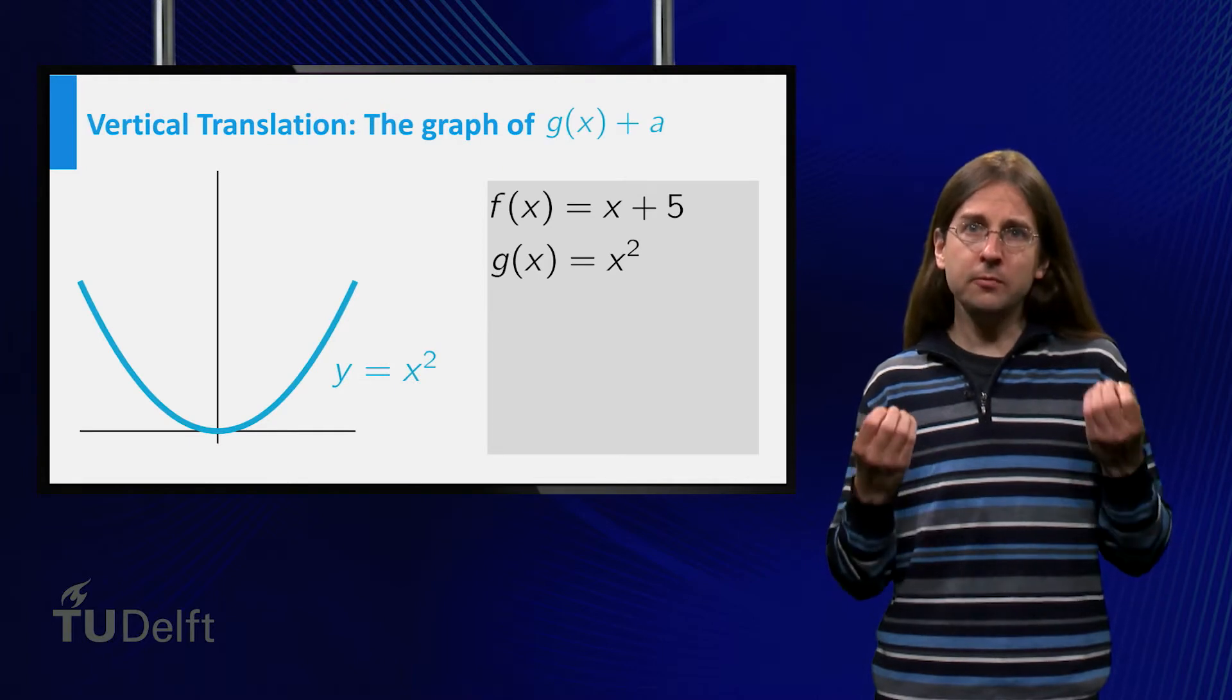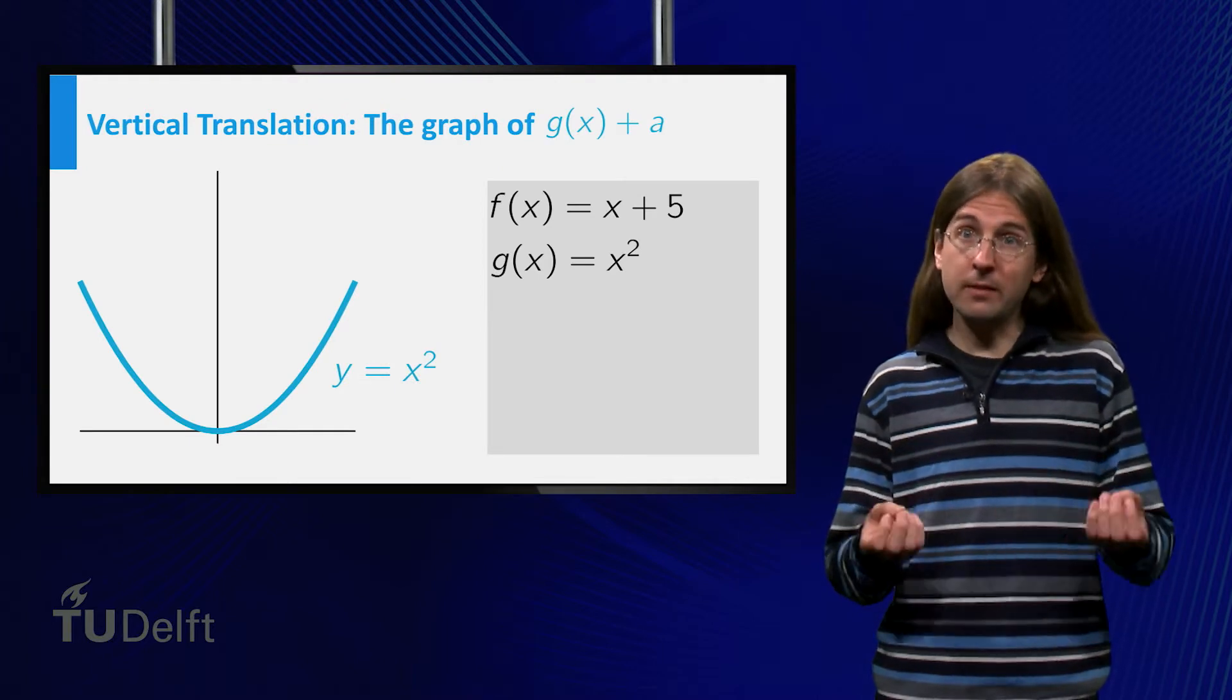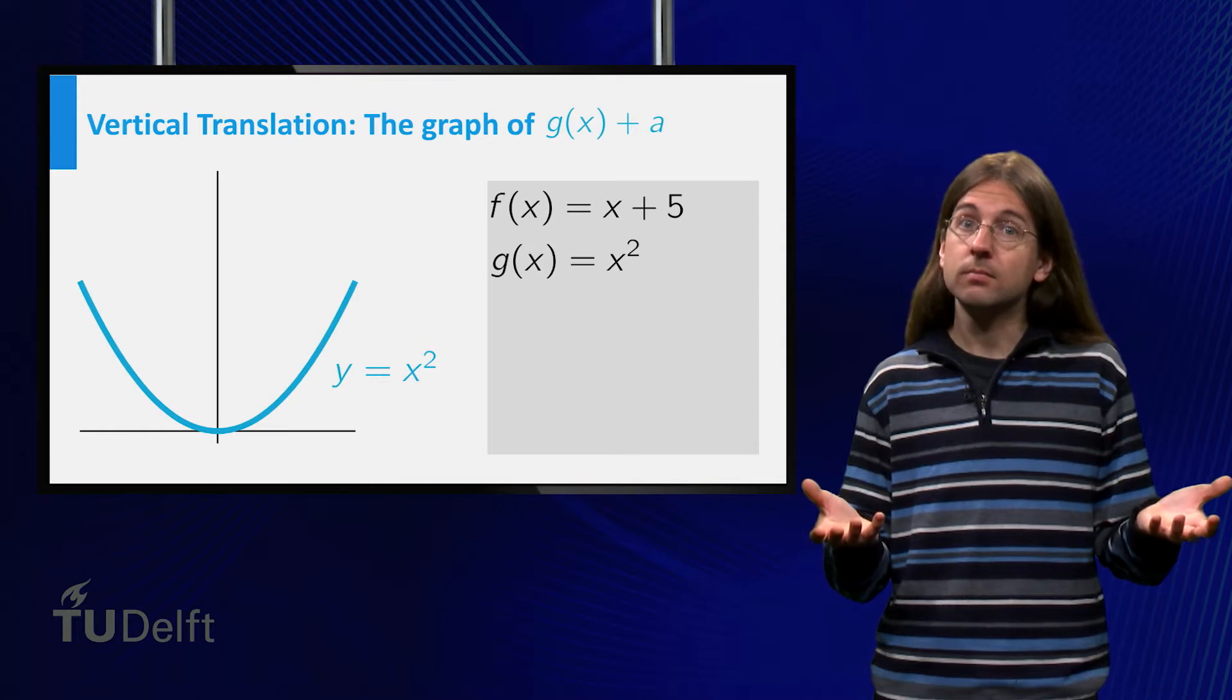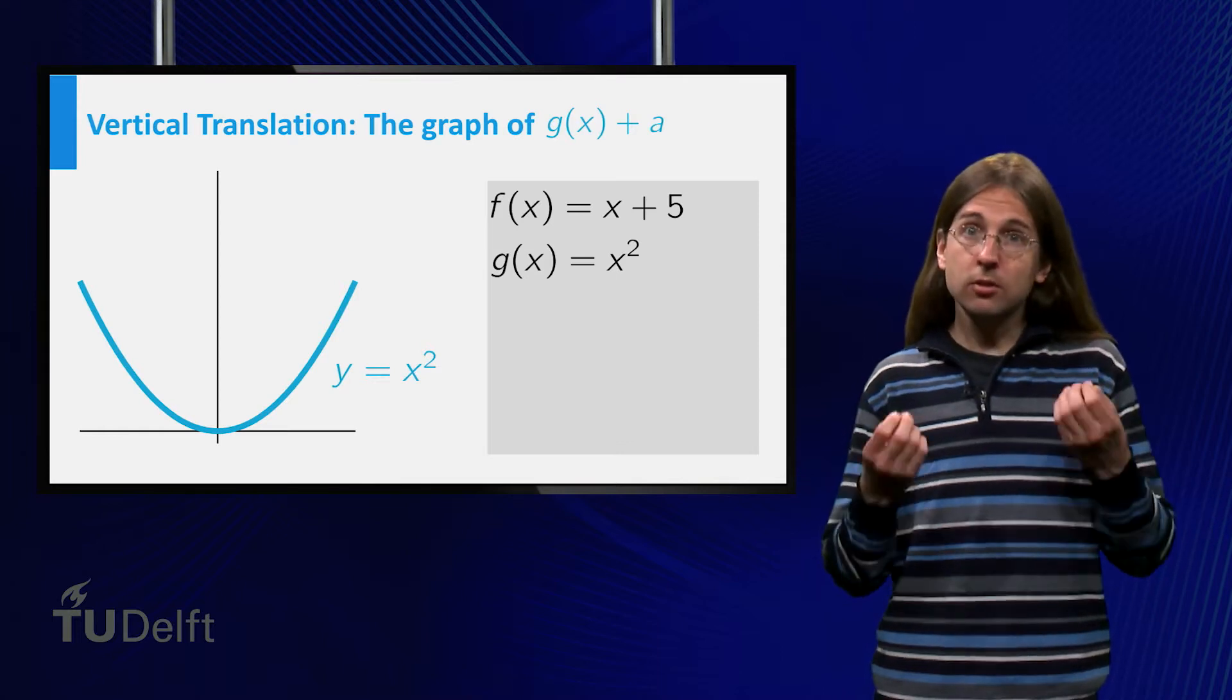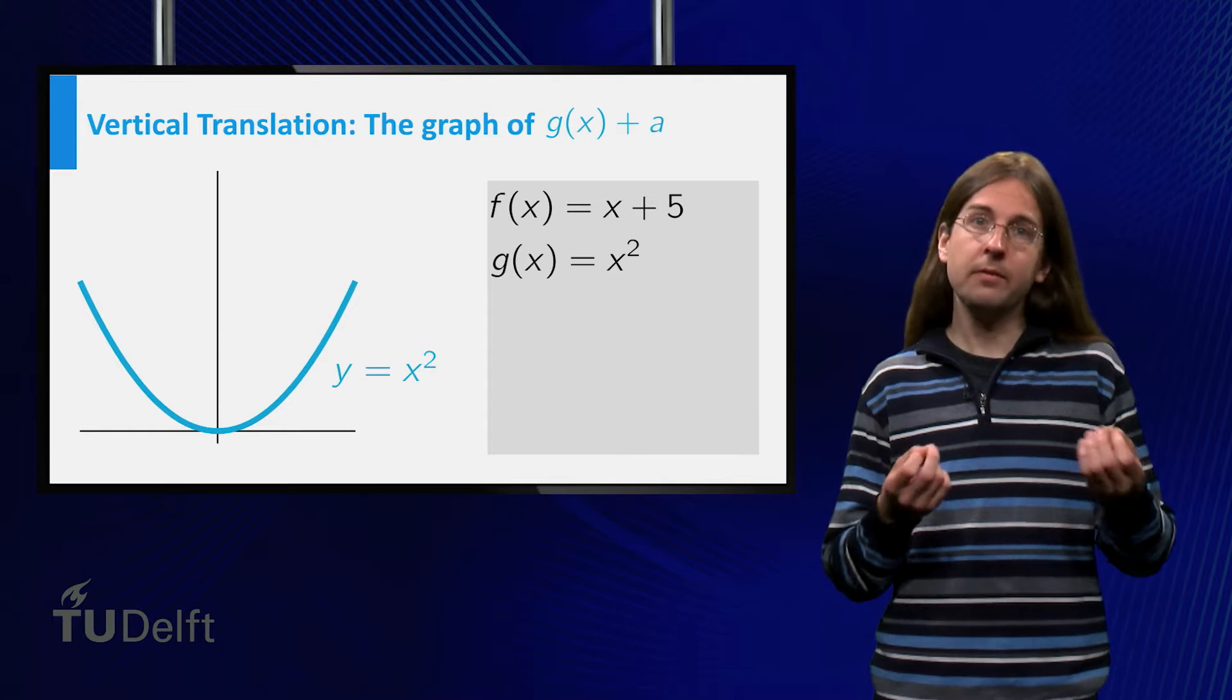What happens to the graph of a function if you compose it with f equals x plus 5? We consider the composition of g equals x squared with f.